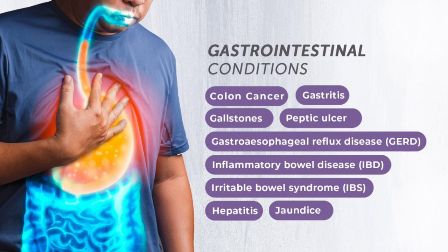The most important complication of celiac disease is osteoporosis; rarely it can cause T-cell lymphoma. Important associations include hypothyroidism, vitiligo, type 1 diabetes mellitus, and dermatitis herpetiformis. For diagnosis, first-line investigation is tissue transglutaminase antibody (TTG) and IgA. If TTG is positive, confirm with jejunal biopsy showing villous atrophy, crypt hyperplasia, and increased intraepithelial lymphocytes. Treatment is gluten-free diet only.